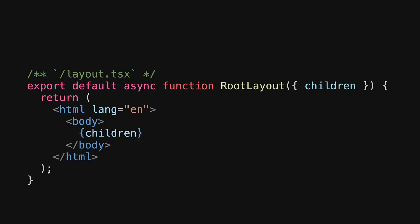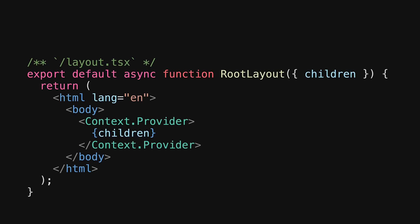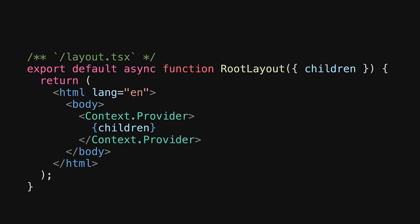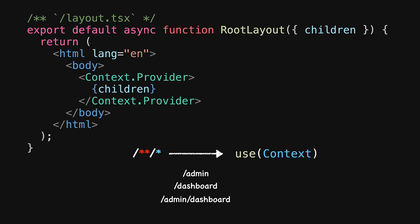Within the root layout of our application, we could render a context provider that wraps anything that our application is going to display. This makes the store contained within the context available for all routes within our application. Any client component anywhere within our application will be able to get access to whatever is contained within this context — doesn't matter if it's rendered within slash admin or slash dashboard or slash admin dashboard, all routes will have access to this context.